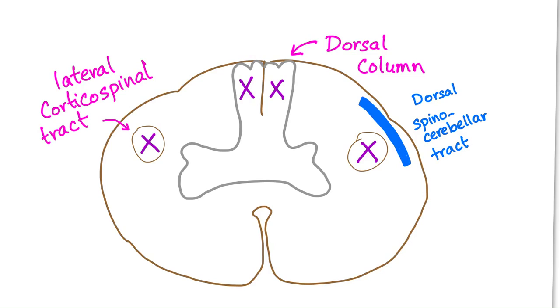So here is the subacute combined degeneration of the cord. Demyelination will occur at three sites. One, the dorsal column. So what will happen? Loss of vibration and proprioception sensation. Fine.